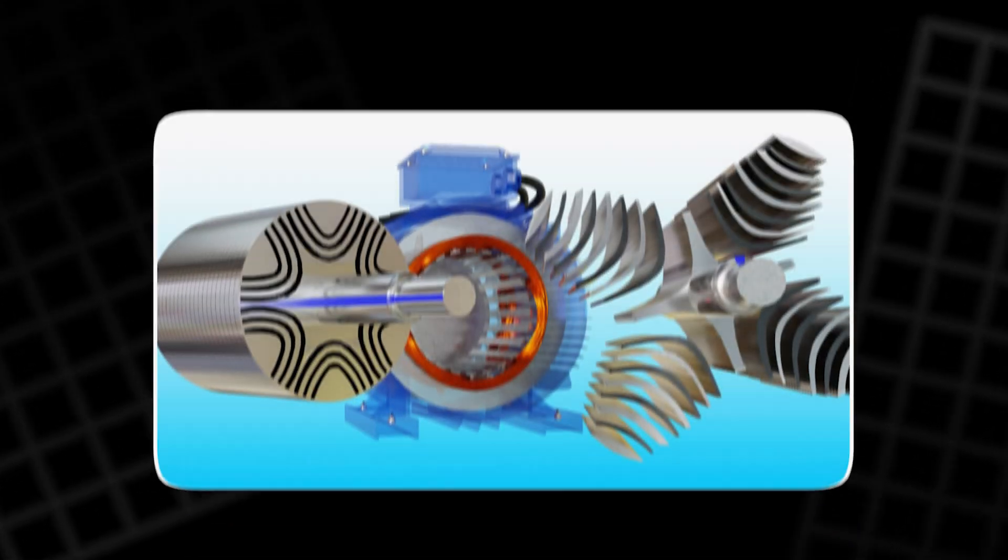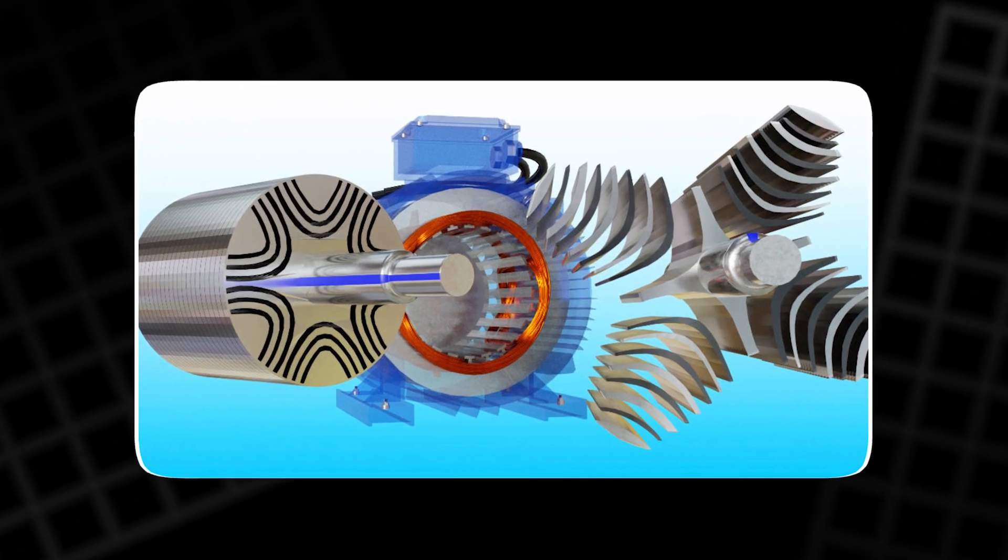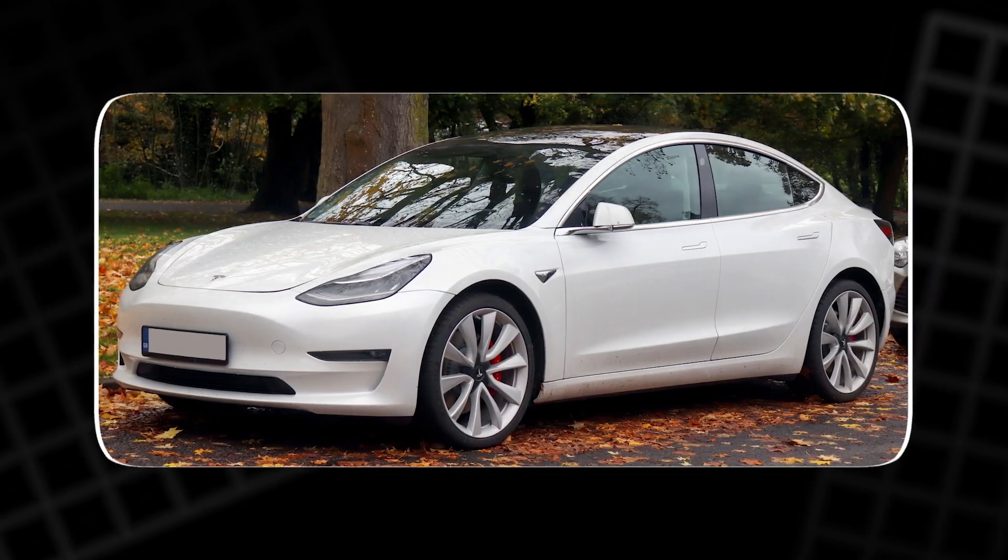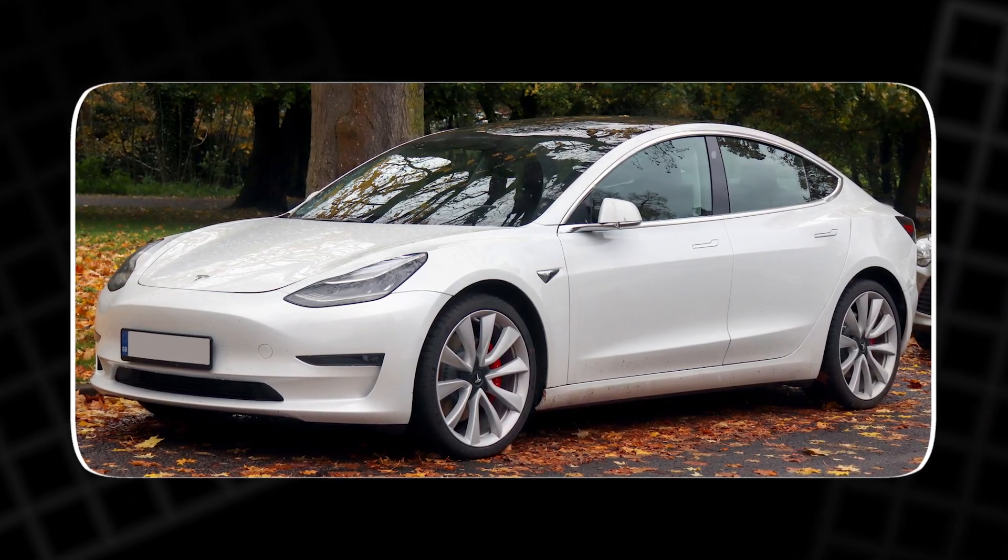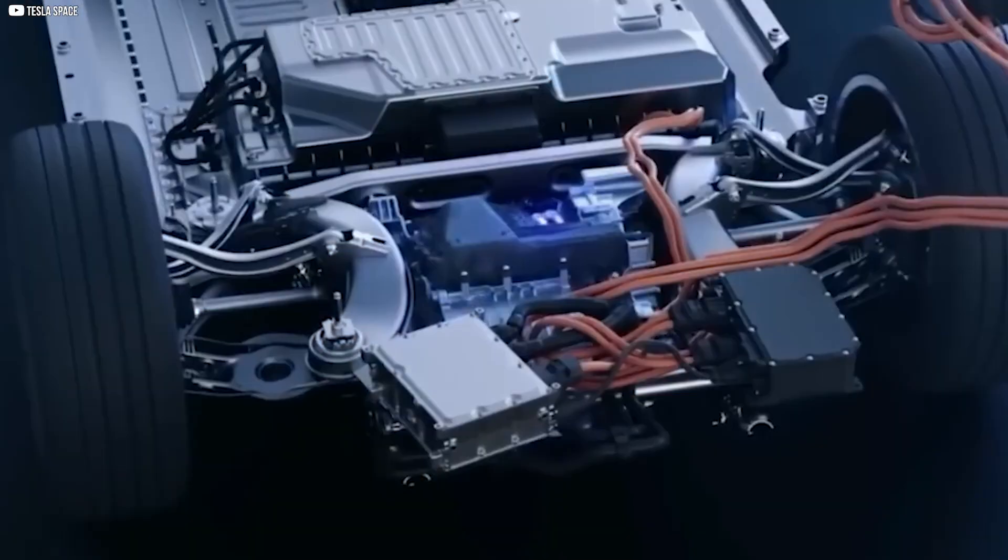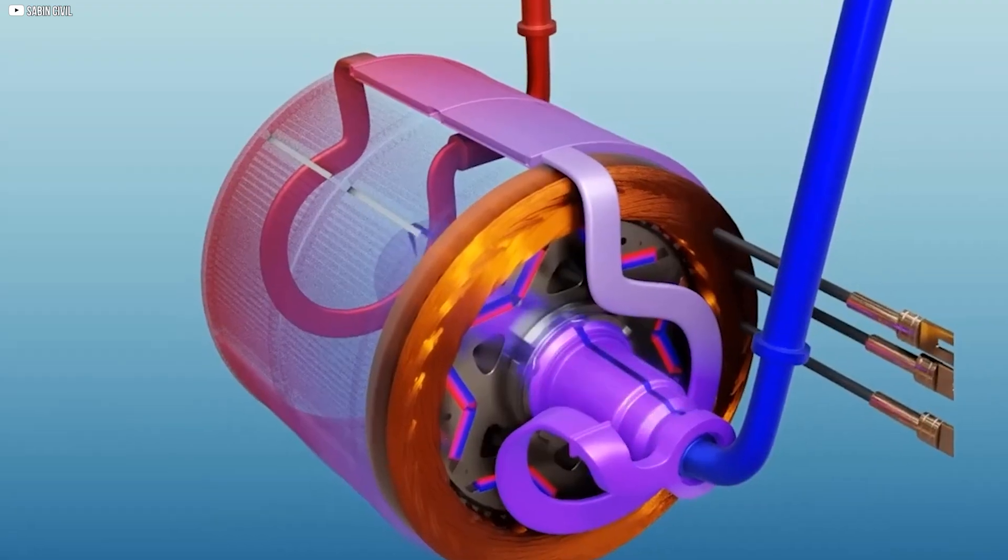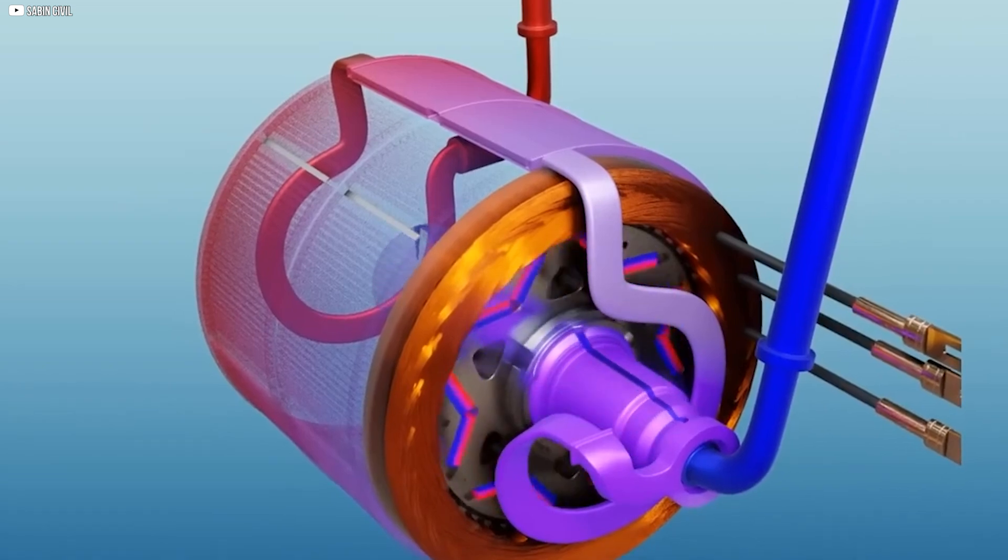Combining the best of both worlds - IPM SYN-RM. Tesla's genius move was combining these two technologies into one motor. In the Model 3's IPM-SYNRM, permanent magnets provide strong starting torque at low speeds, while the rotor's reluctance characteristics ensure efficient, high speed operation.